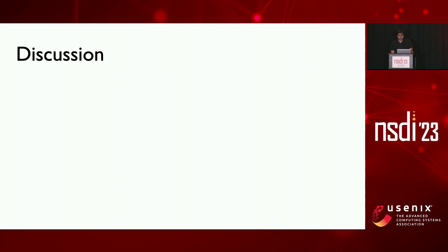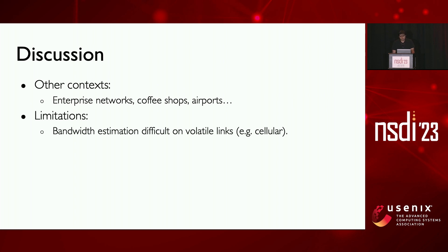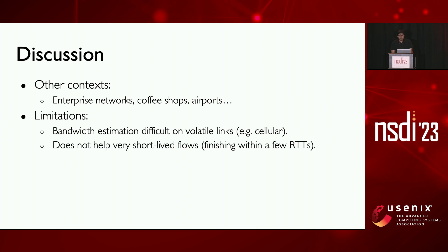I would like to finish with some discussion points. I discussed the example of a home network, but Crab can also be applied to other contexts, like enterprise networks or coffee shops. There are some limitations to Crab's usage as well: since bandwidth probing works over multiple RTTs, it does not do a good job over very volatile links, like cellular networks, where link capacity can change over sub-RTT time scales. Since Crab works by throttling flows and having senders react to throttling, very short flows may not benefit from Crab since they finish within a few RTTs.